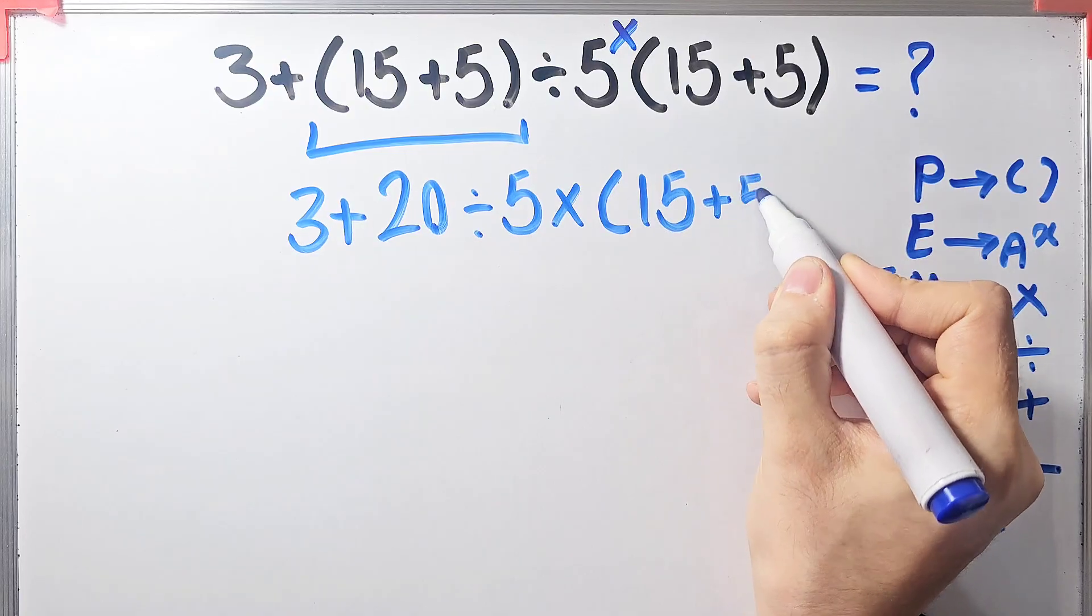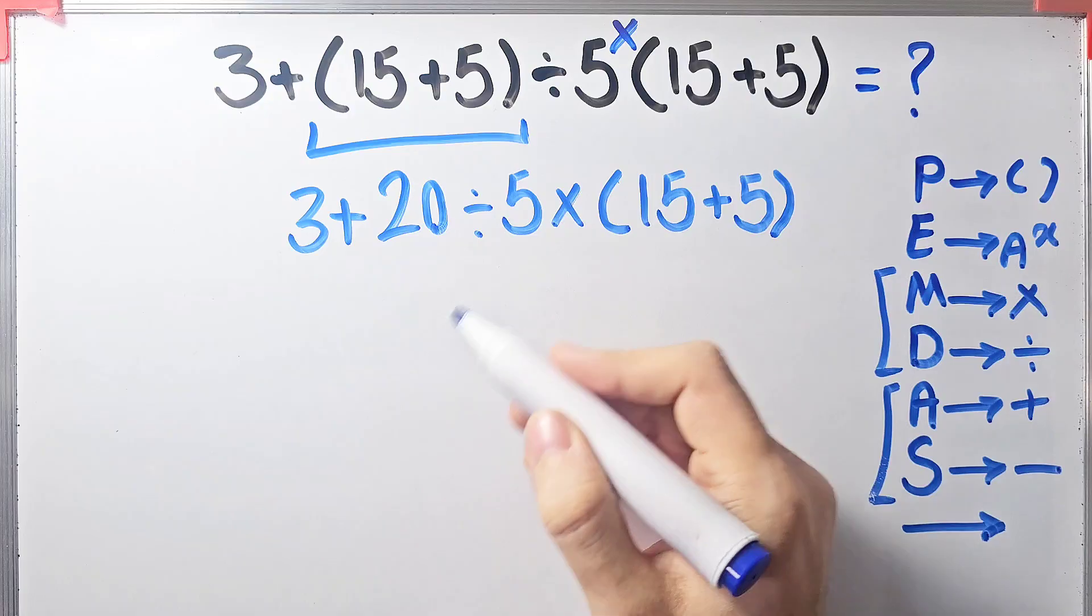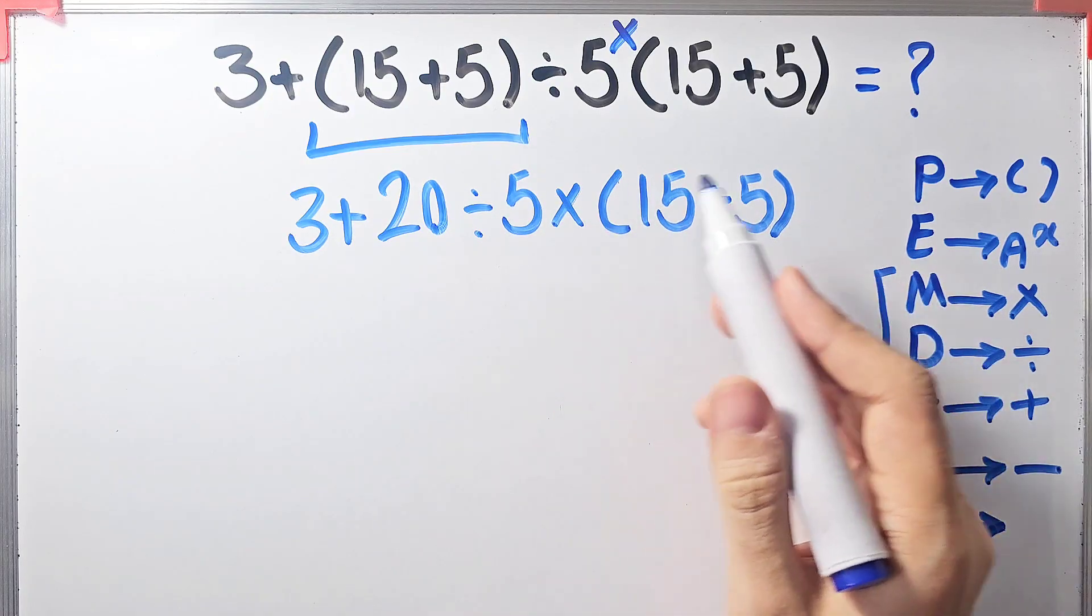Now we have addition, division, multiplication, and parenthesis again. We simplify this parenthesis: 15 plus 5 equals 20.